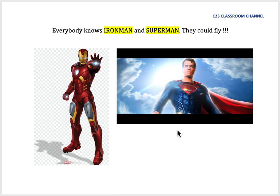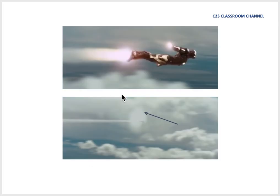I think everybody knows Iron Man and Superman. The advantage of them is they could fly. If we watch their movies carefully, we find that sometimes when Iron Man flies after a certain velocity, after a certain speed, we could see a cloud formation around his body like this.